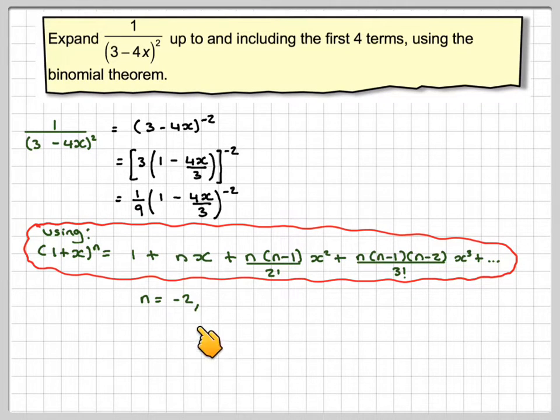We're going to have that n must equal -2 and x will be equivalent to -4x/3. So you get (3-4x)^(-2) equals 1/9 of...